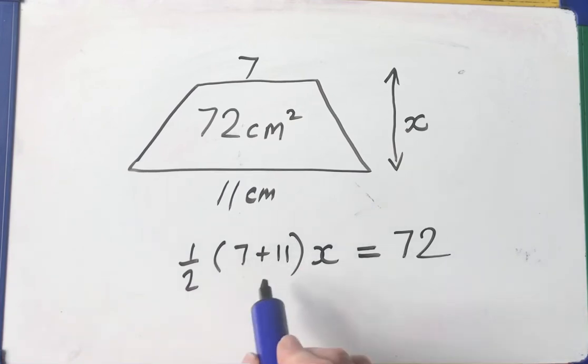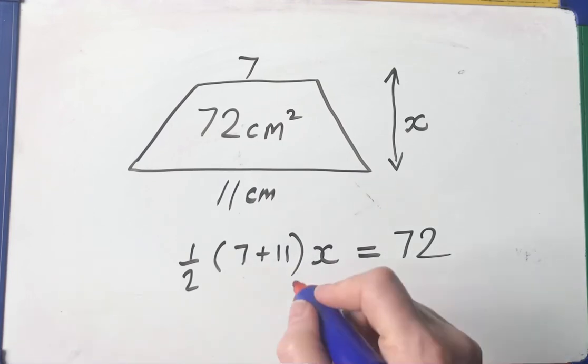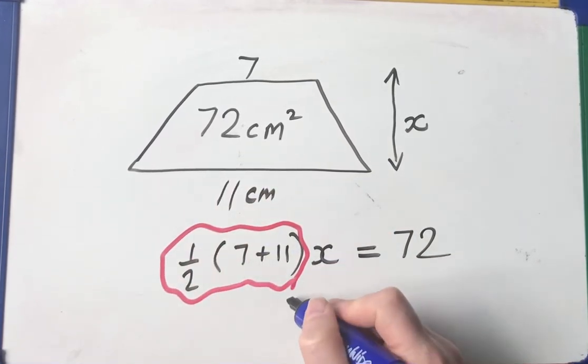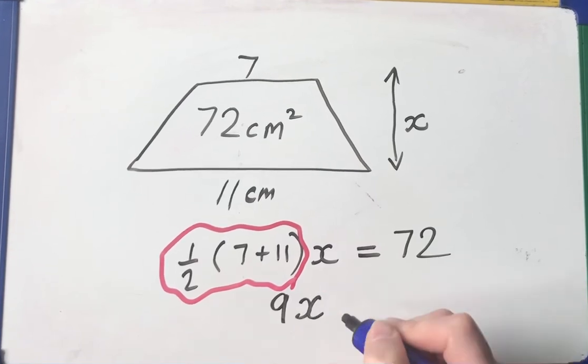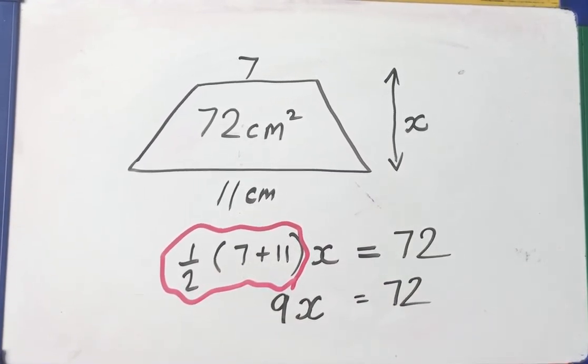So when I add the parallel sides, halve them and then multiply it by that number there, I get 72. I'm going to sort out this horrible looking thing here. There's x's and fractions. It just looks nasty. Well, bid mass, brackets first. 7 plus 11 is 18. Half of 18 is 9. So this little lump of numbers here is 9. So 9 times the height is equal to 72. Times tables in disguise. 72 divided by 9 is 8 centimeters.